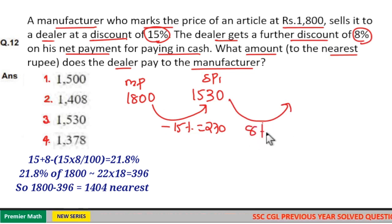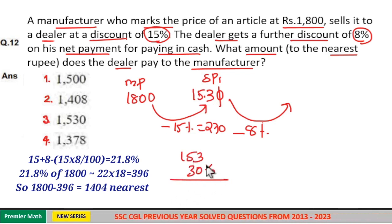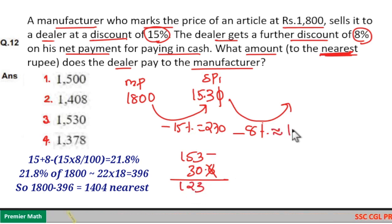8% discount means 10% of 1530 equals 153, and 1% is 15.3. So 2% equals 15.3 times 2, that is 30.6. We can find the nearest value. Now 153 minus 30 equals 123. So 8% is nearly 123.